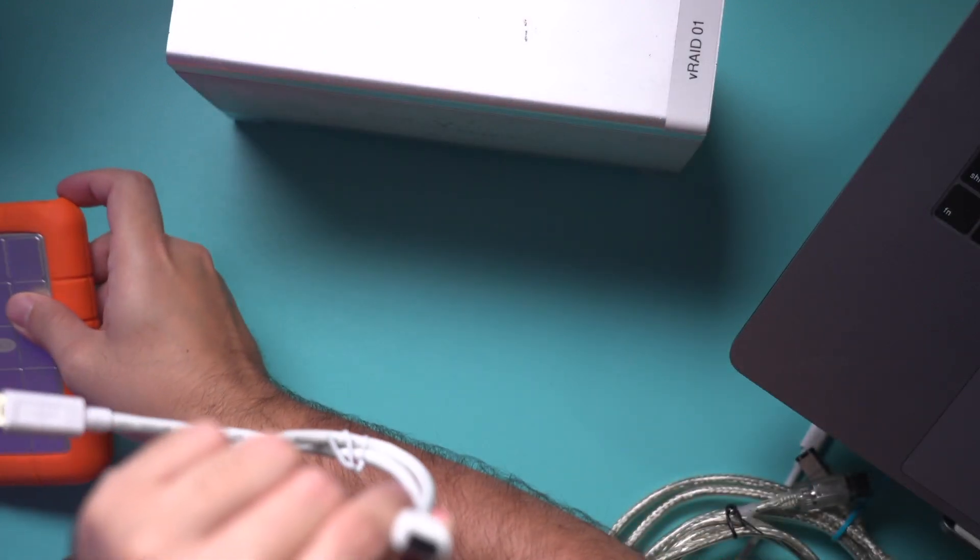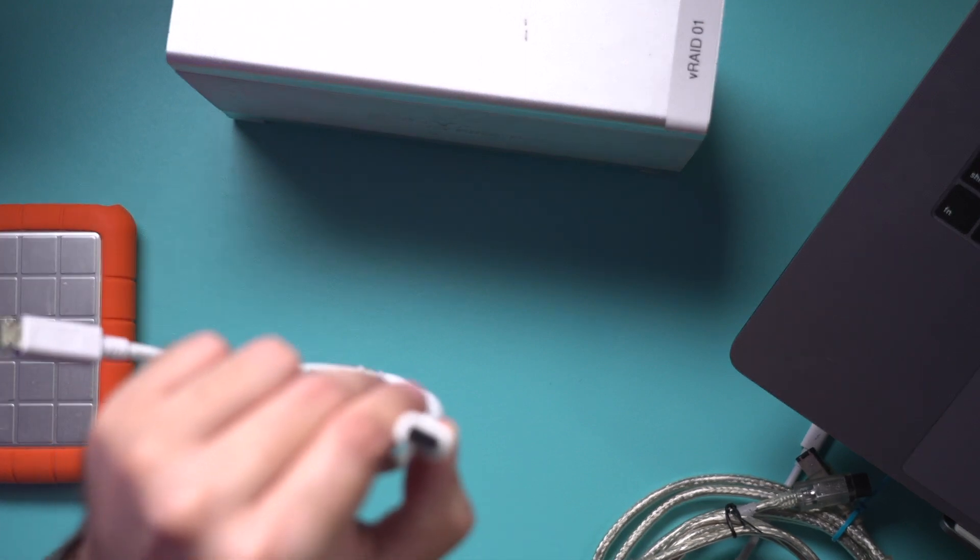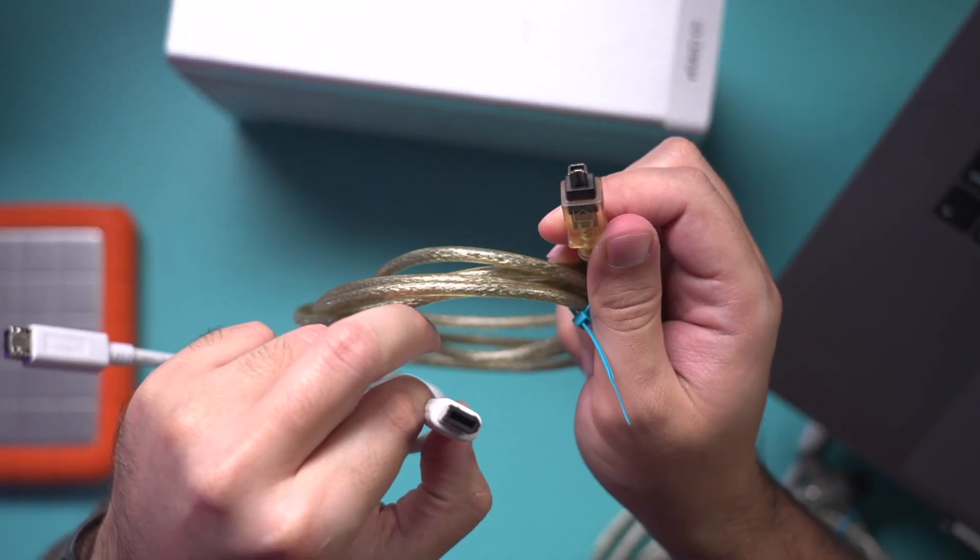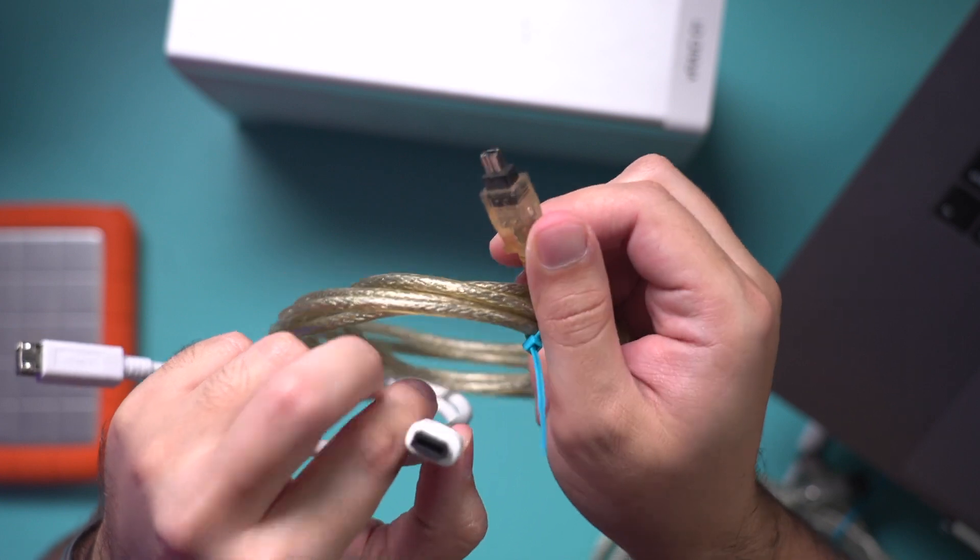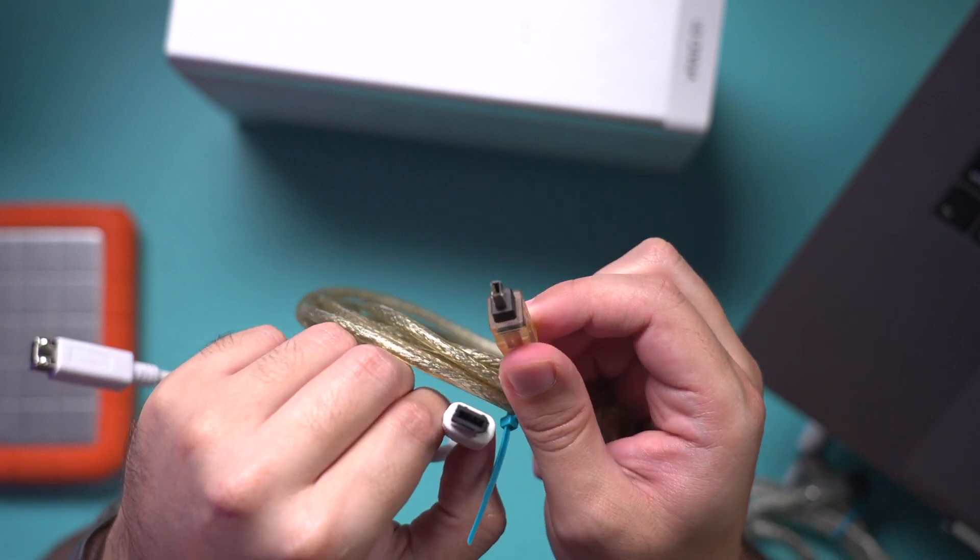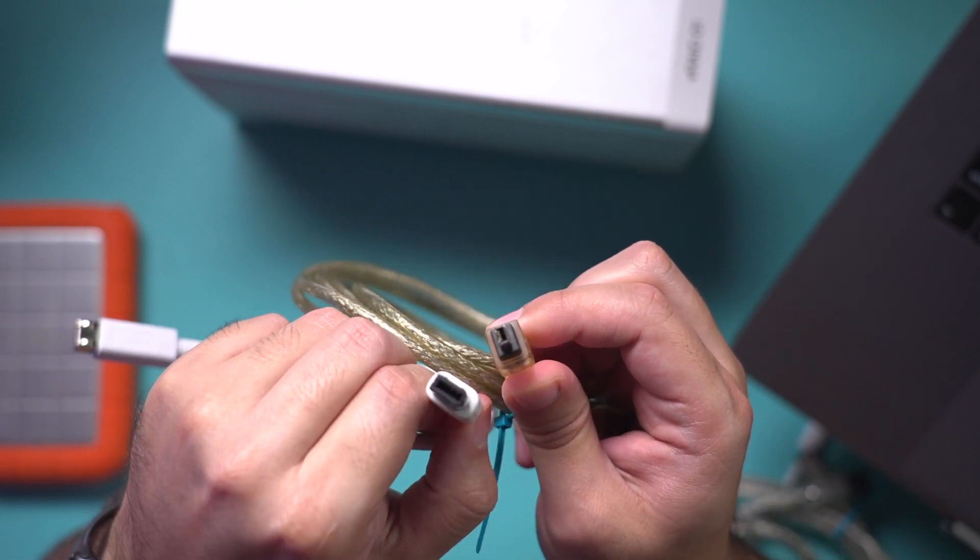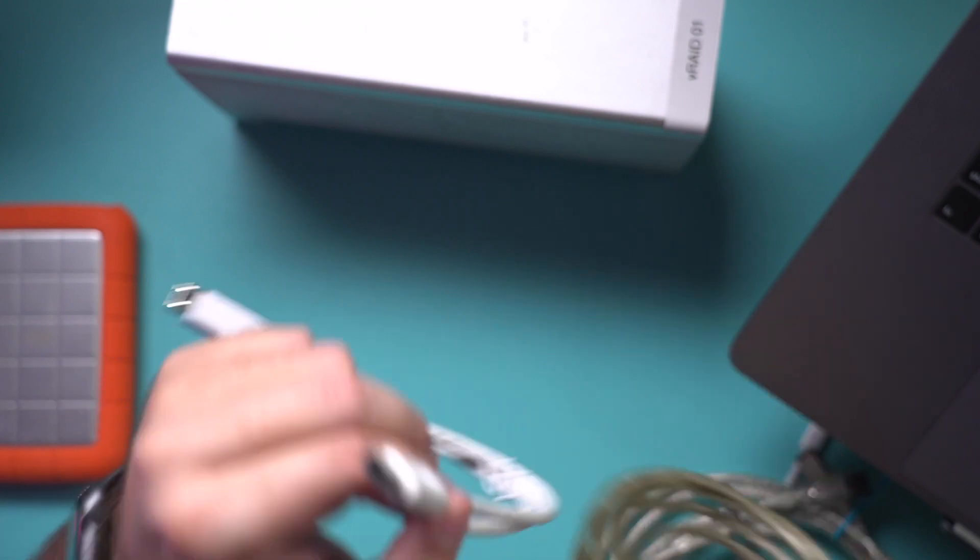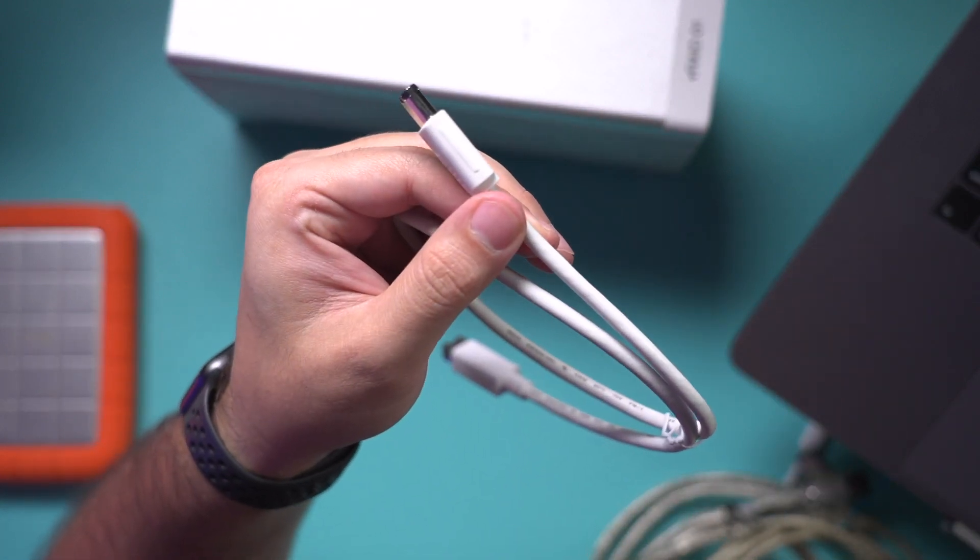This is typically called FireWire DV. It's a little bit of a different shape—you can see it's a little bit smaller than regular FireWire cables. Those are the three different types of FireWire cables.